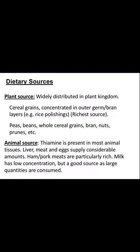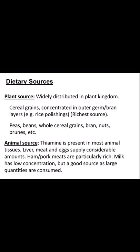Dietary sources of thiamine: in plant sources, thiamine is widely distributed in cereal grains, concentrated in the outer germ and bran layers — especially rice polishings, which are the richest source. You should not wash rice vigorously, otherwise you lose the thiamine. Peas, beans, whole cereal grains, bran, nuts, and prunes are also good sources. In animal sources, thiamine is present in most animal tissues like liver, meat, and eggs. Ham and pork meats are particularly rich.